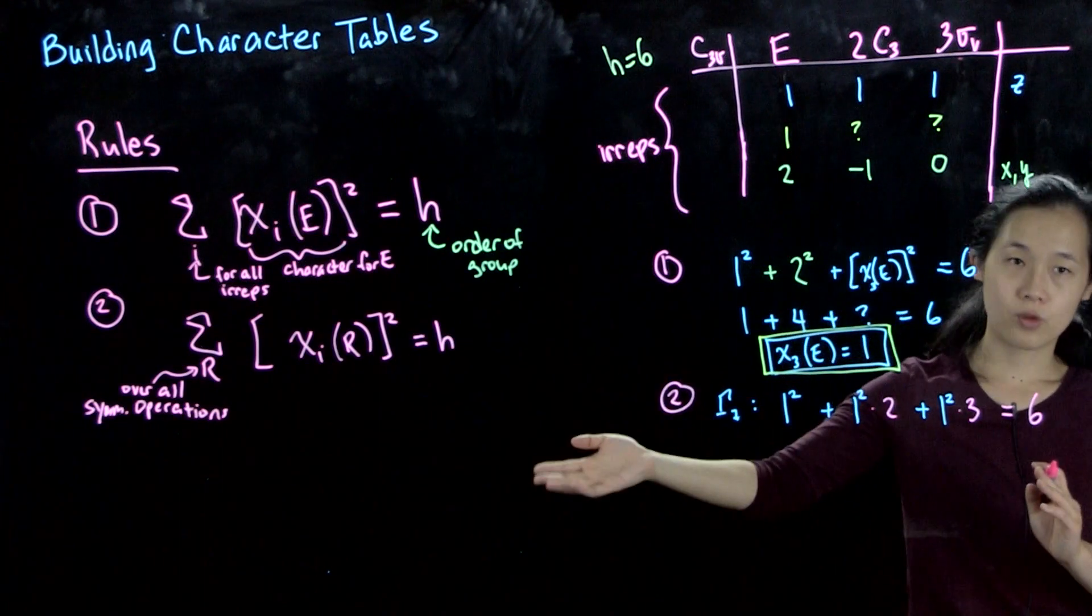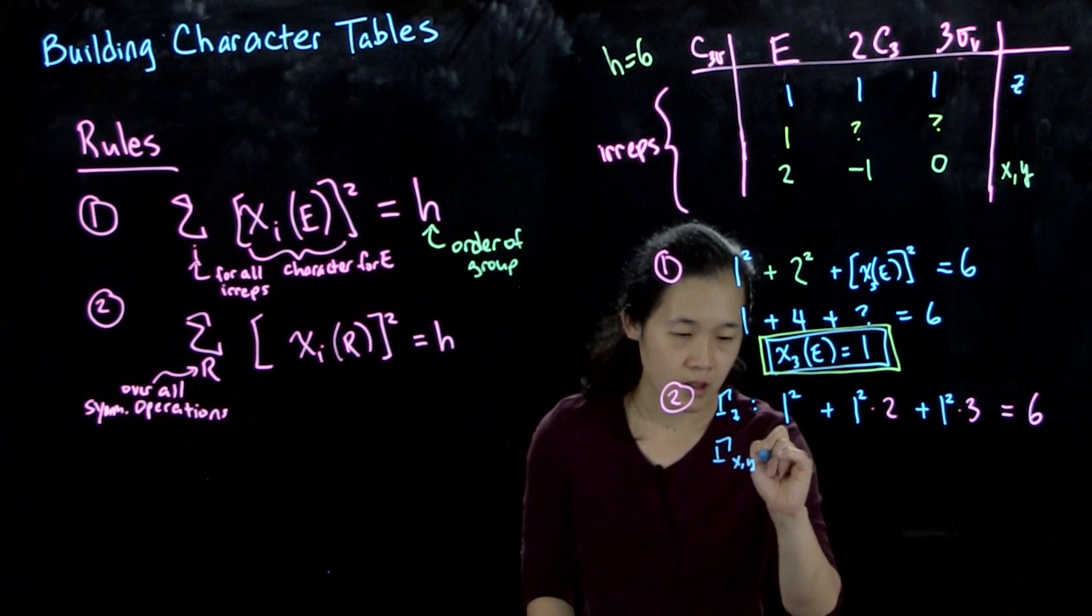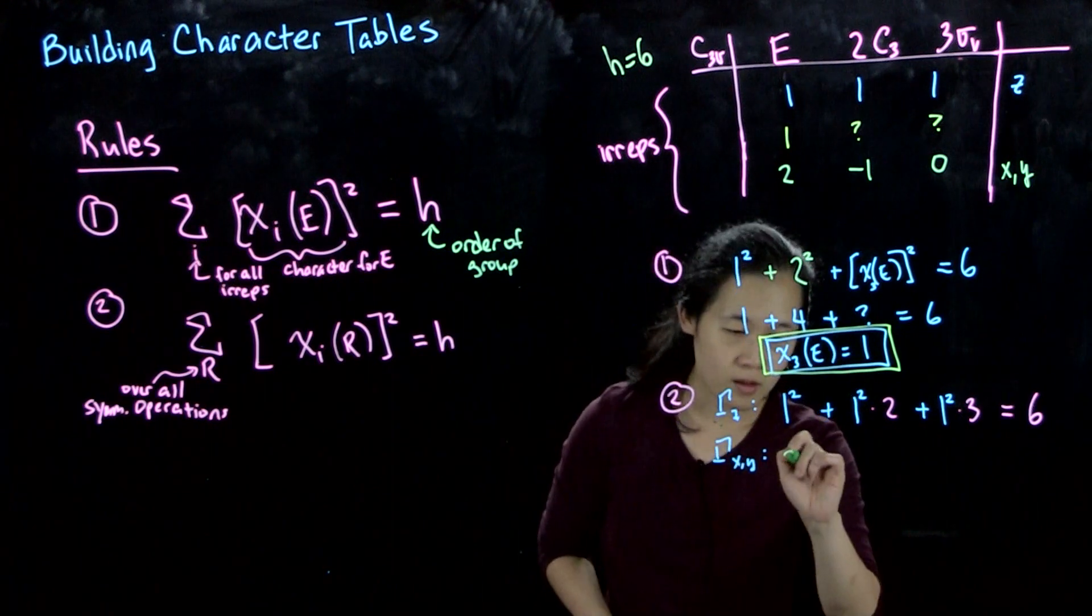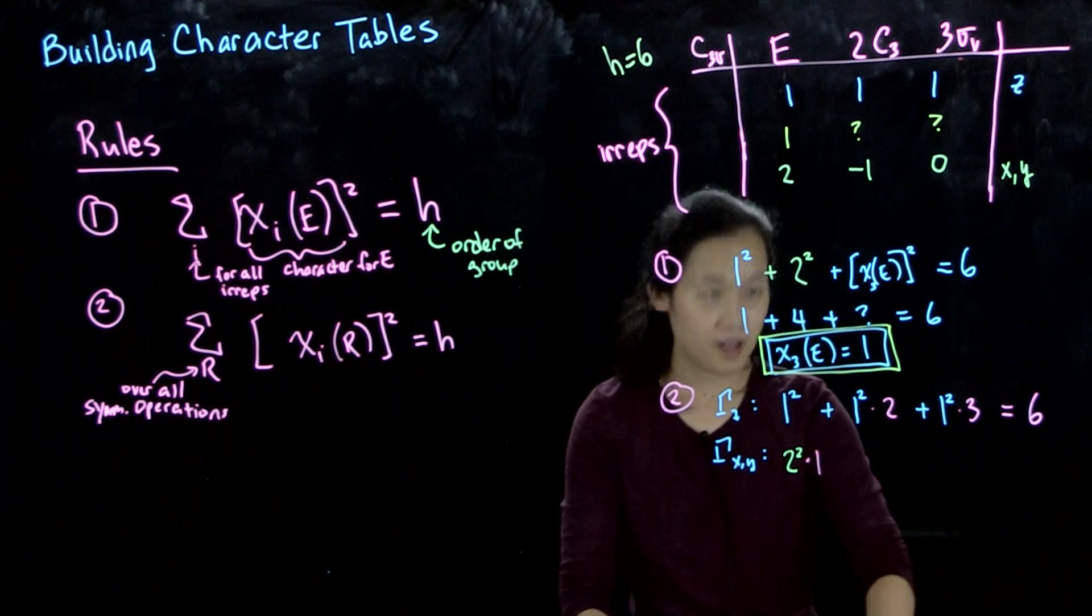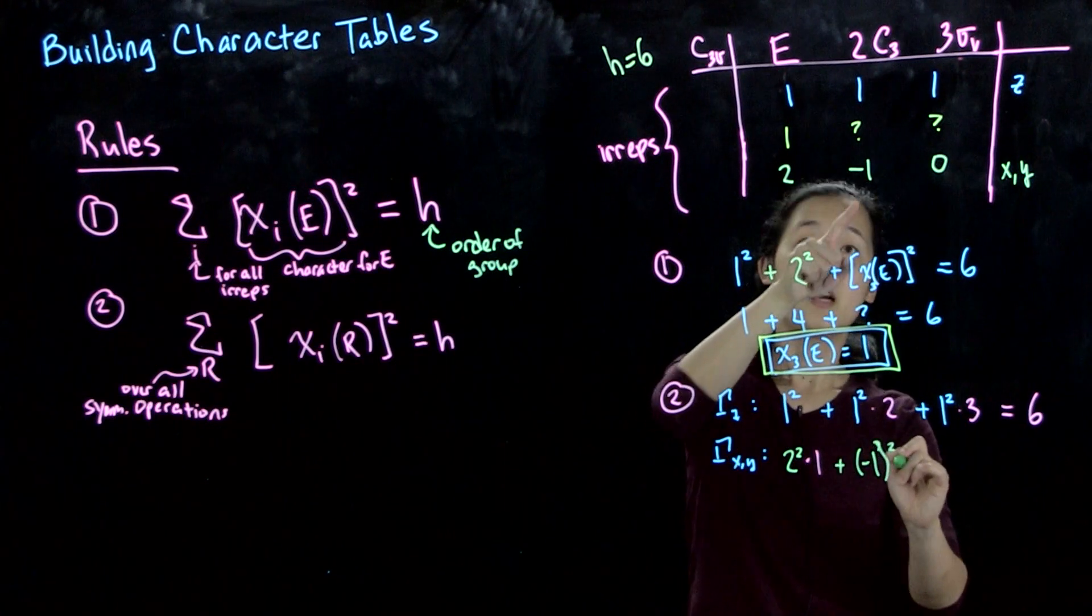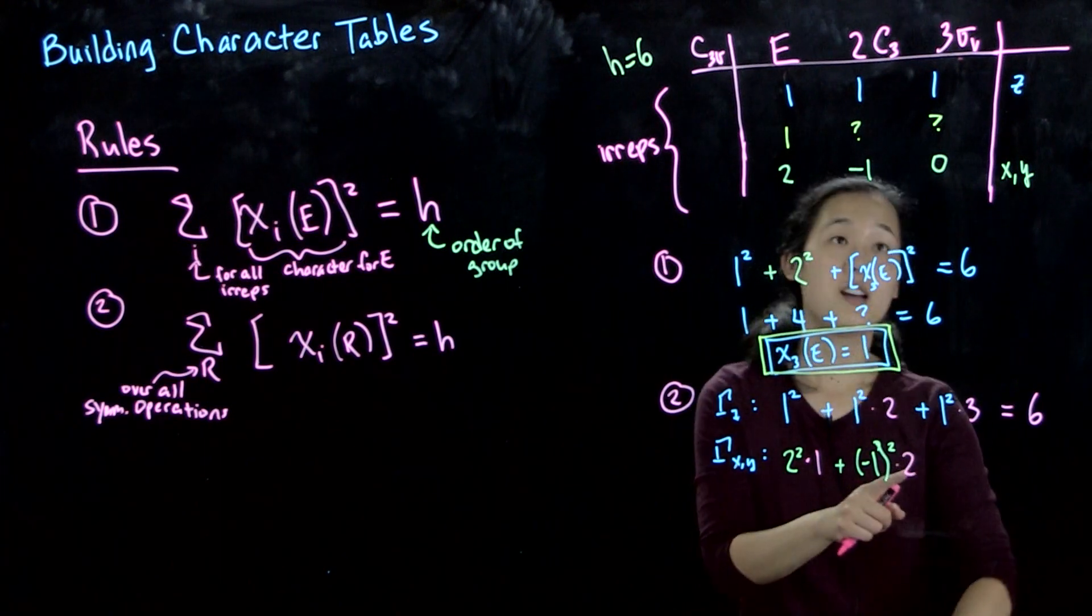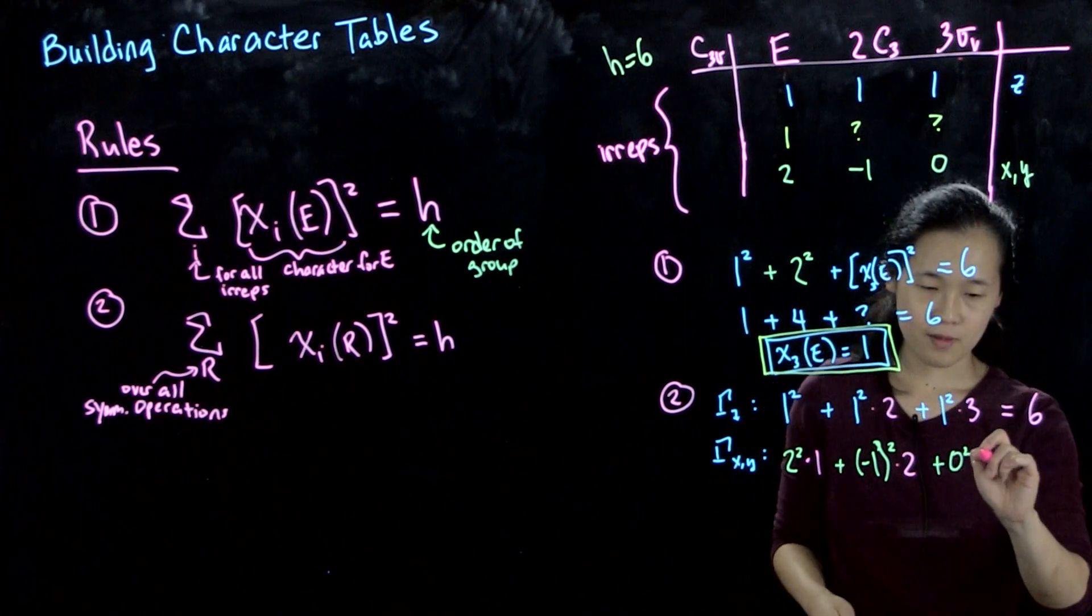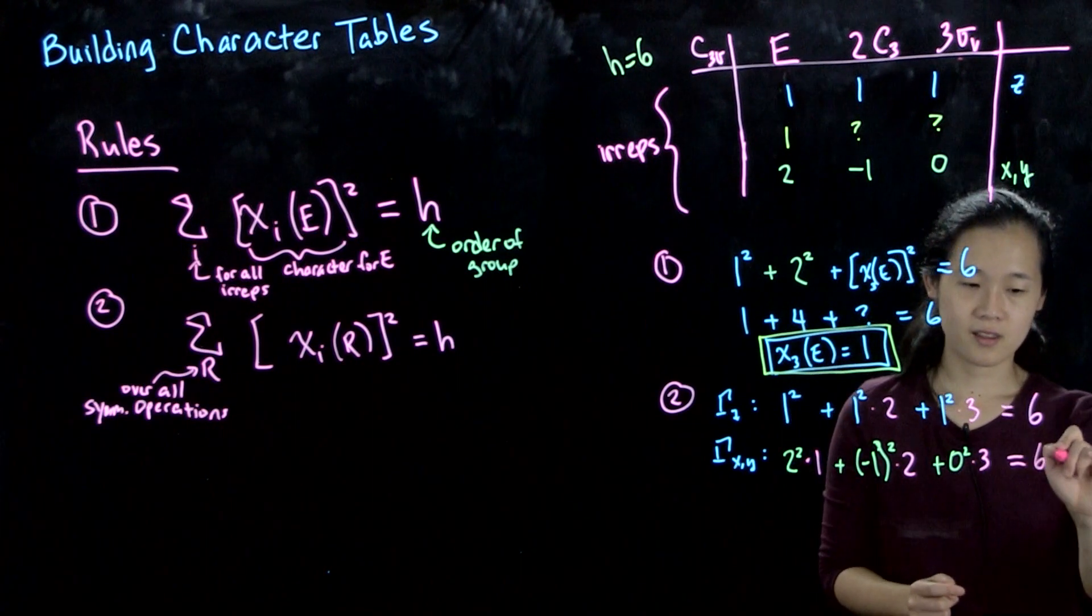We can do the same thing for gamma xy. So this is going to be 2 squared times 1, and the coefficient for E is 1. And then minus 1 squared, and the coefficient for C3 is 2. And then we have 0 squared times 3. So overall, this is going to be equal to 4 plus 2, which is going to be 6. So that checks out.